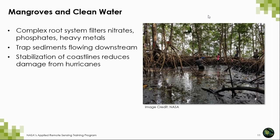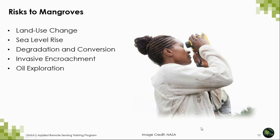How do mangroves contribute to clean water? Because mangroves have really complex root systems, they're able to filtrate nitrates, phosphates, and heavy metals out of the water they grow in. Those roots also help in trapping sediments flowing downstream and help in the stabilization of coastlines, which reduces damage from hurricanes and tropical storms. There's a wide range of risks to mangroves, including land use change such as deforestation or conversion to other land cover classes, sea level rise, degradation, invasive encroachment, and oil exploration.